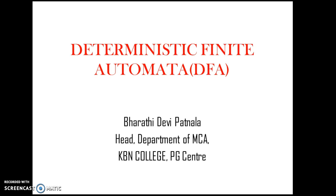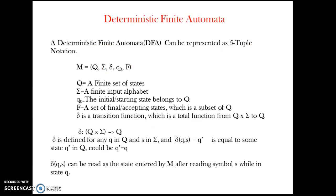First let us see what is Deterministic Finite Automata. Deterministic Finite Automata can be represented as a 5-tuple notation — that is, a machine can be represented in 5-tuple as: Q, sigma, delta, Q0, F.